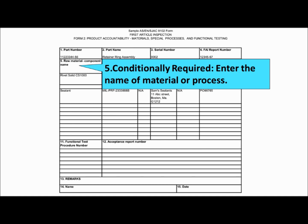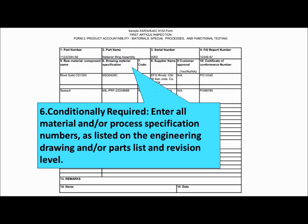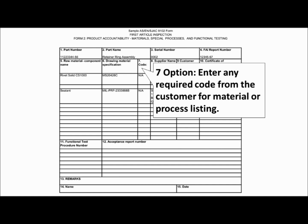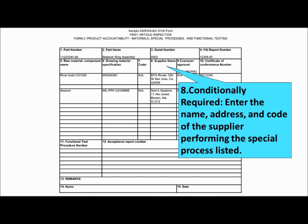Field 5 is conditionally required — please enter all material and/or process specification numbers as listed on the engineering drawing and/or parts list and revision level. Field 7 is optional — please enter any required code from the customer for material or process listing. Field 8 is conditionally required — please enter the name, address, and code of the supplier performing the special process listed.